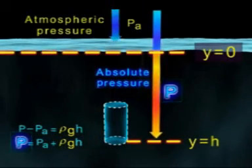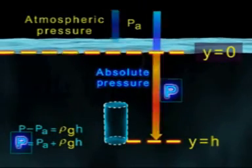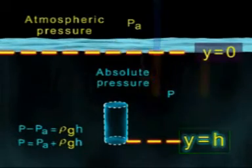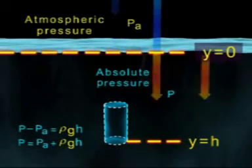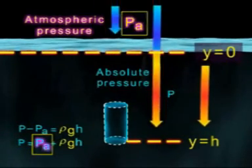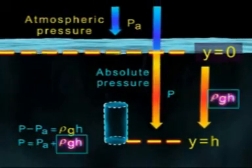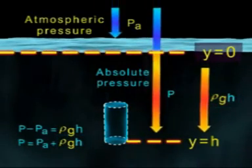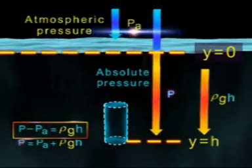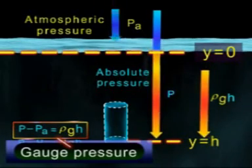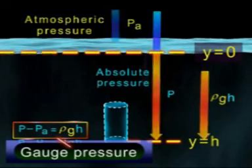This represents that the absolute pressure P at a depth h is greater than the atmospheric pressure Pa on the liquid surface open to the atmosphere by amount ρgh. Again, this difference P - Pa = ρgh is known as gauge pressure.